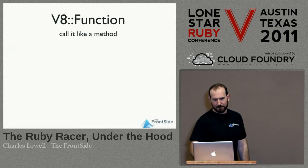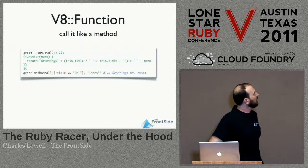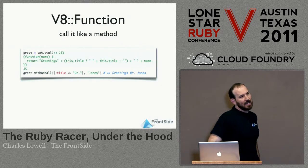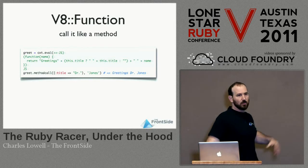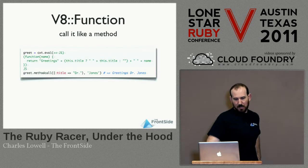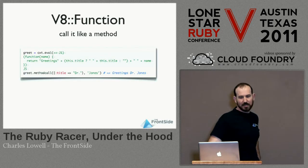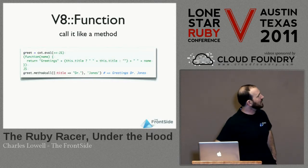There's another method on V8::Function called method_call. The first argument is what gets set as the 'this' variable, and the rest of the arguments follow naturally. So you can see in this example it's the same function but invoked differently, and it puts out something entirely different.